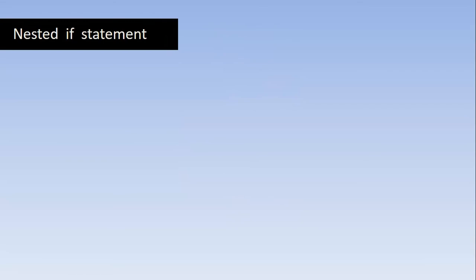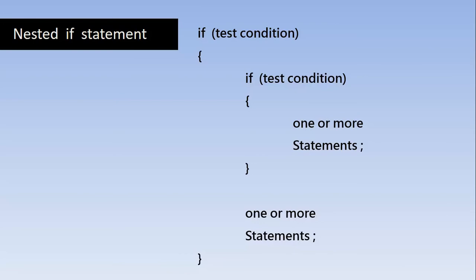Now we will understand what is a nested if statement. Nesting means putting a code inside another code. In the nested if statement, we put one if statement inside another block. The control first comes to the outer if condition — if it is true, control enters that block and checks another inner condition. If the inner condition is also true, the inner block executes. The execution of the inner statements is dependent on the truthness of both conditions.